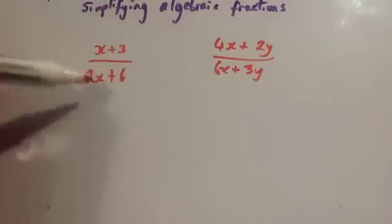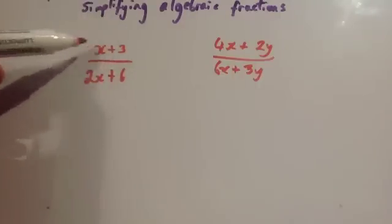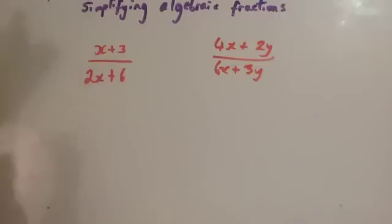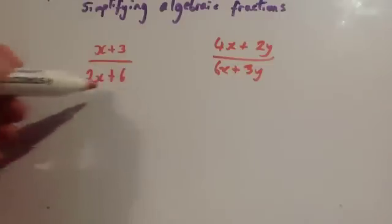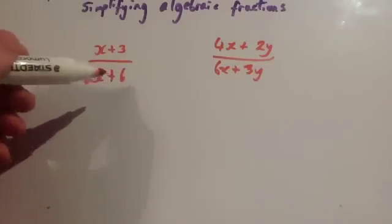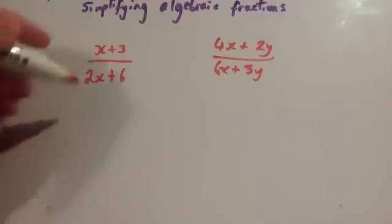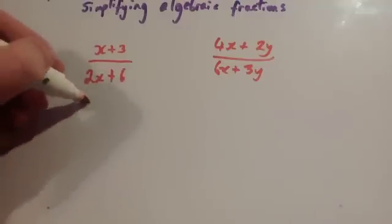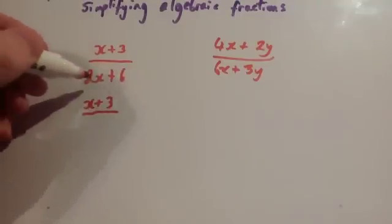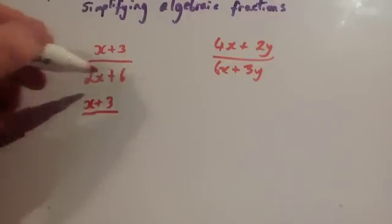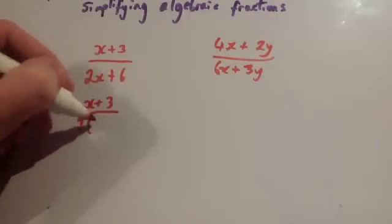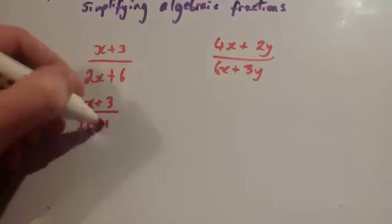Looking at the one on the left-hand side, the top line can't be factorised — x plus 3 is just x plus 3. However, the denominator can be factorised: you've got 2x plus 6. So let's factorise this bottom line. You've got x plus 3 on the numerator, over 2x plus 6, and 2 is going to come out as a common factor, giving you 2 bracket (x plus 3).